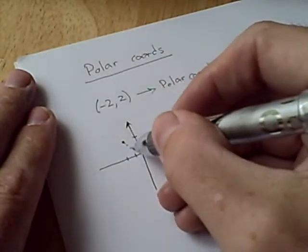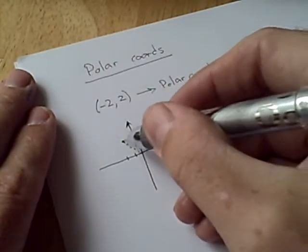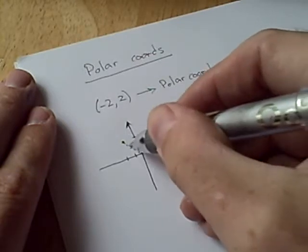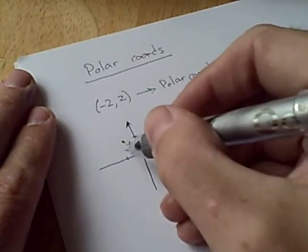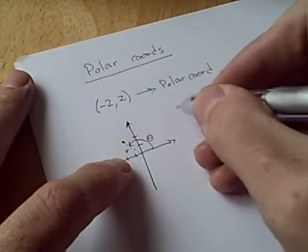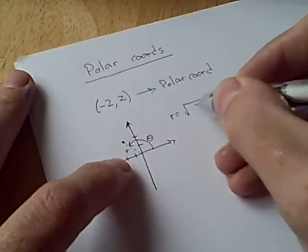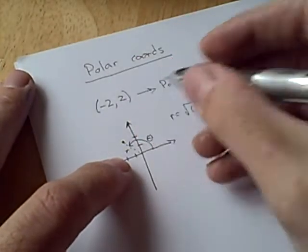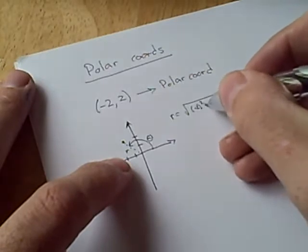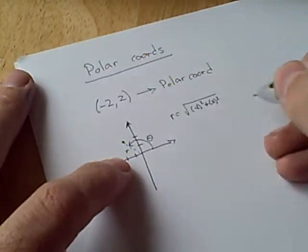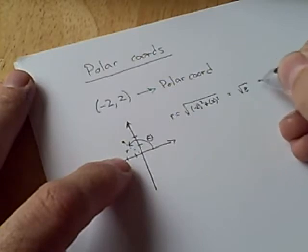So what we need to do is find the radius, that being the distance of this point from the origin, and also the angle that's subtended, theta. So r shouldn't be too bad. r is going to be the square root of x squared plus y squared. So that's going to be the square root of 8, or 2 root 2.